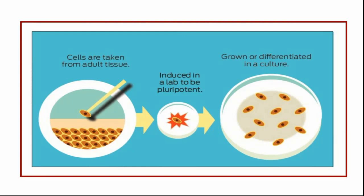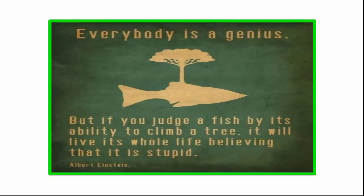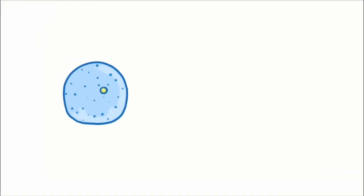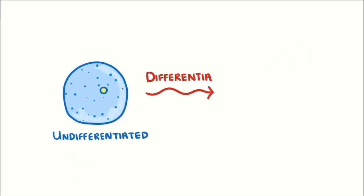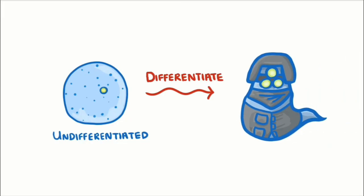Cells are taken from an adult tissue, induced in a lab to be pluripotent, and then grown or differentiated in a culture. This next section discusses how undifferentiated cells such as stem cells differentiate into other cell types that carry out specific functions. We call these cells specialized cells.